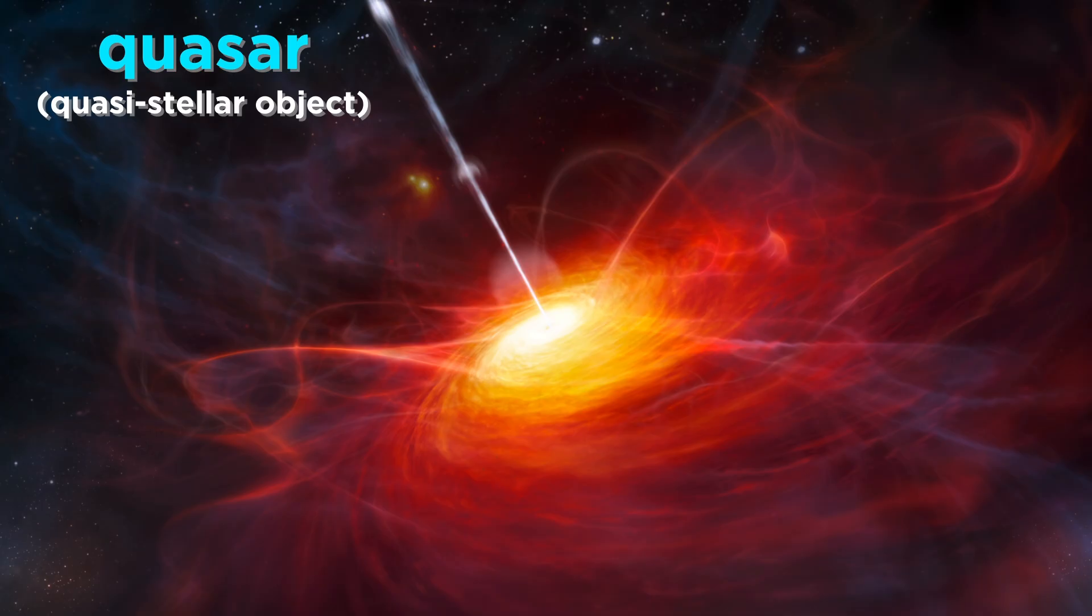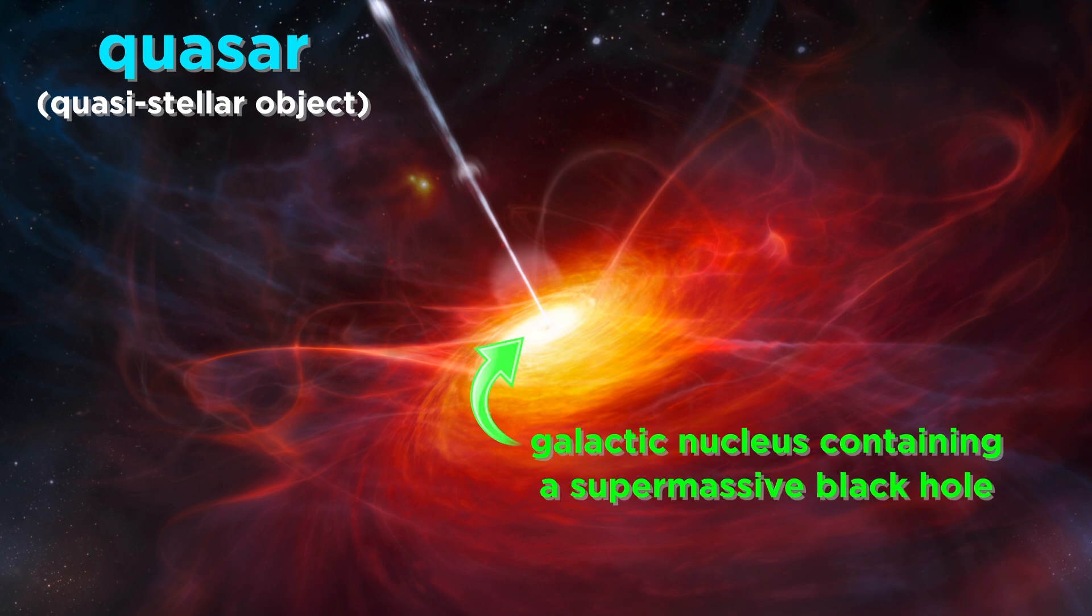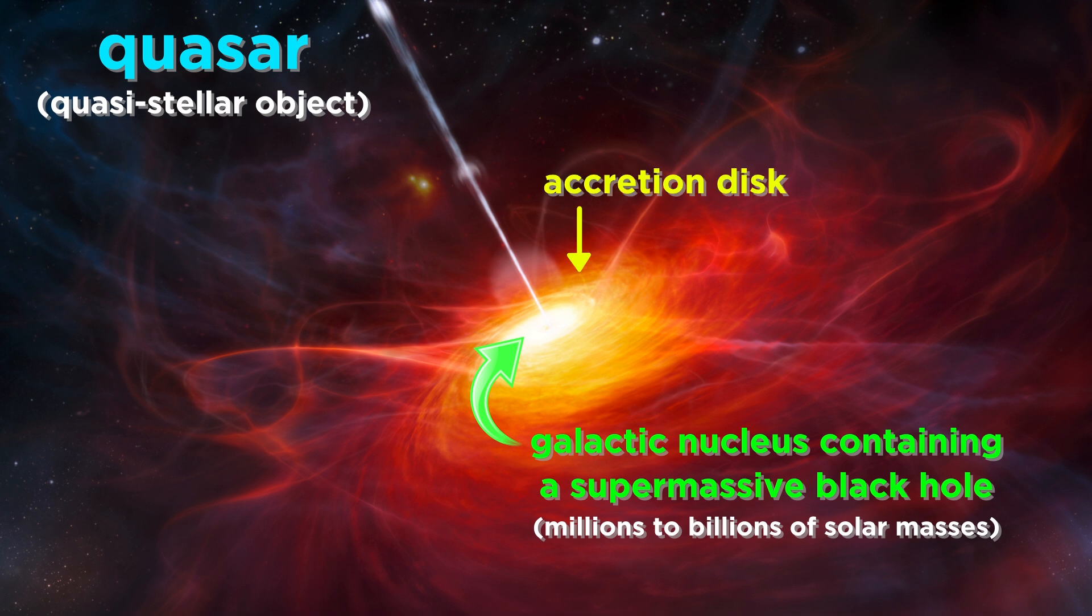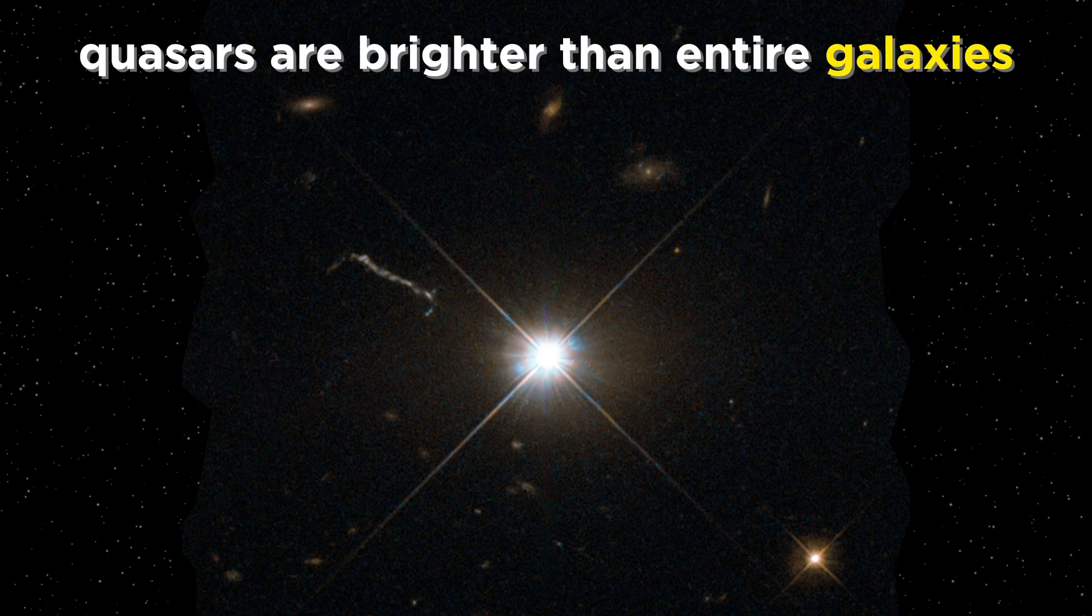Some of these galaxies have something at their center called a quasar, short for quasi-stellar object, back when astronomers didn't know what they were. These are actually galactic nuclei, and at their center is a supermassive black hole. That's a black hole with millions or even billions of solar masses. This is surrounded by an accretion disk of gas, which as it falls into the black hole emits an unbelievable amount of energy, causing quasars to glow thousands of times brighter than an entire galaxy, which is very helpful for spotting them since they are so far away.